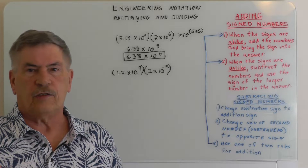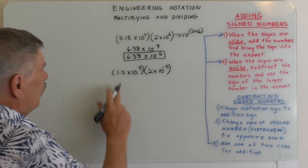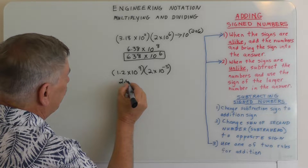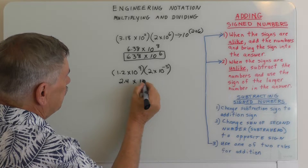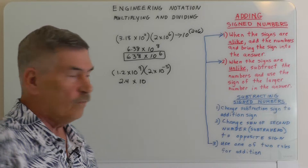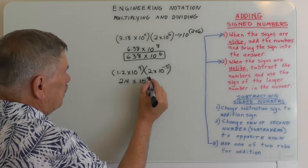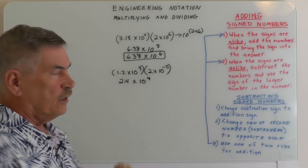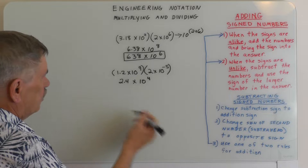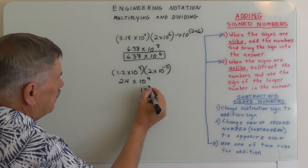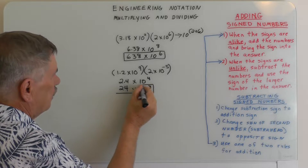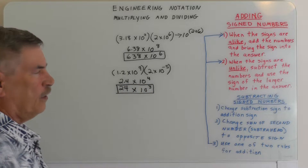Let's take a look at the second example. We've got 1.2 multiplied by 2, which gives us 2.4 times 10. We add our exponents: 9 plus a negative 5 gives us 4, so that's 10 to the fourth. Now we want to put this in engineering notation. Making this number smaller will make this number bigger, so this is going to be 24 times 10 to the third power.